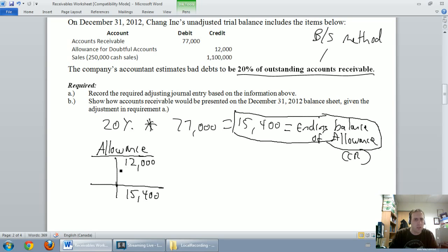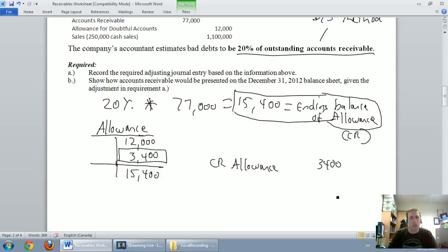Well, I'm missing a number. There's sort of a number that needs to plug in here. And the missing number, you can see, has got to be missing a credit of $3,400. Okay, so I know I need to credit my allowance for $3,400. Again, if it's missing in a T account, the way to remedy that is to do a journal entry.